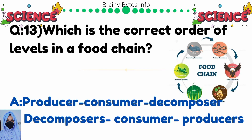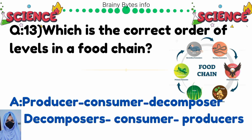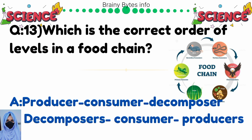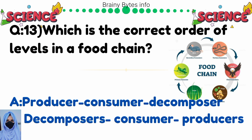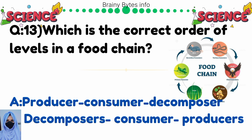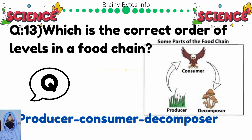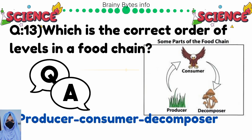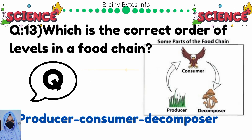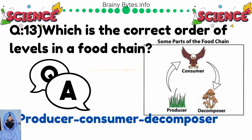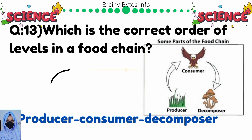Which is the correct order of levels in a food chain? Option A: producer, consumer, decomposer. Option B: decomposer, consumer, producer. Correct answer is producer, consumer, decomposer.